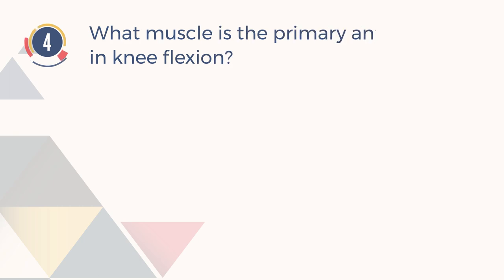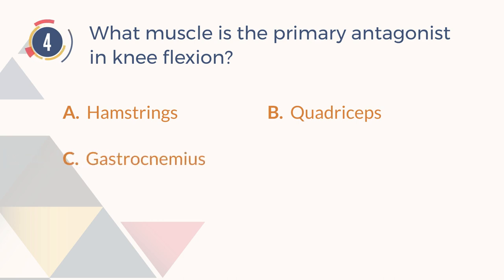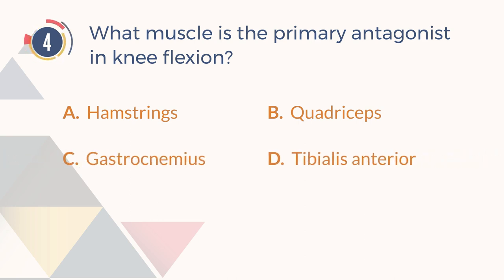Number 4. What muscle is the primary antagonist in knee flexion? A. Hamstrings. B. Quadriceps. C. Gastrocnemius. D. Tibialis anterior.